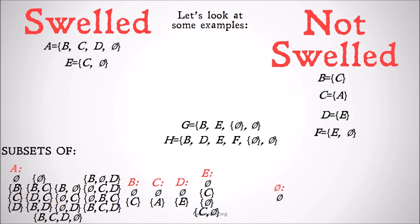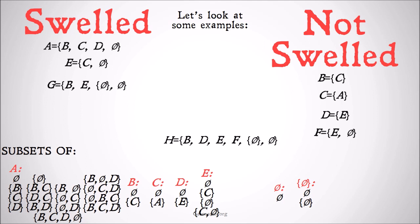What about the set of the null set? The only subsets of the set of the null set are the null set itself and the set of the null set — since everything is a subset of itself. G contains both of those. And G contains the null set, whose only subset is itself. So G is swelled.